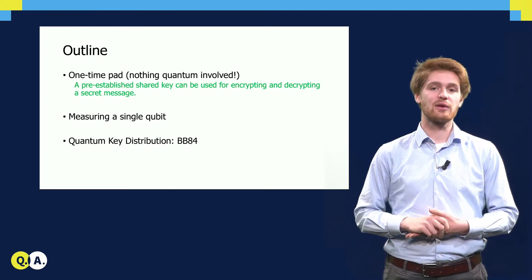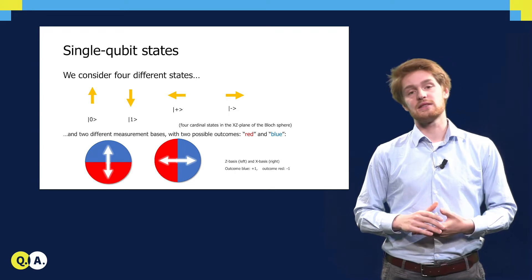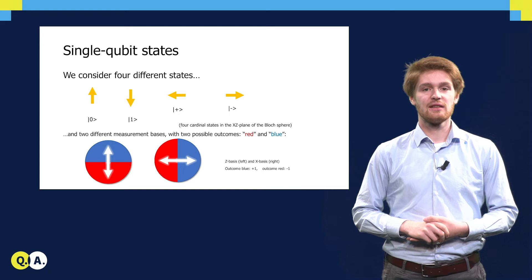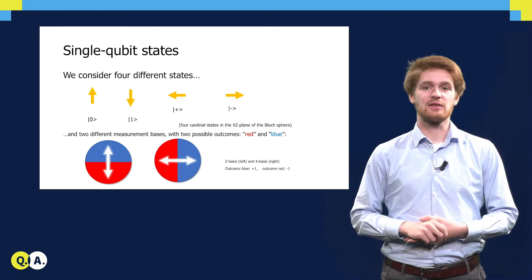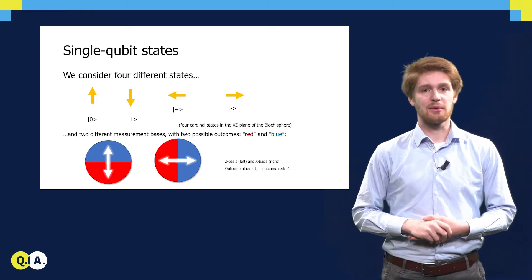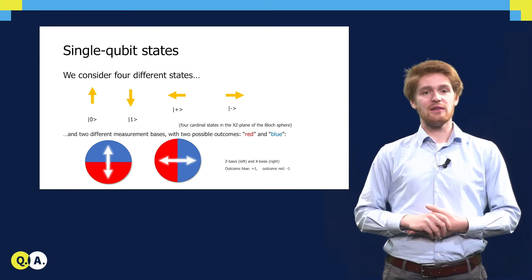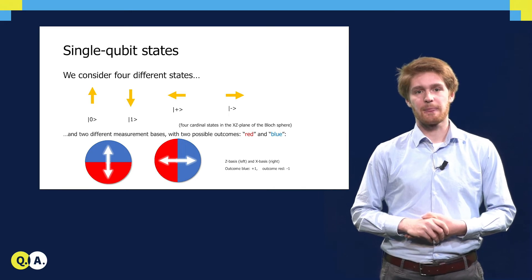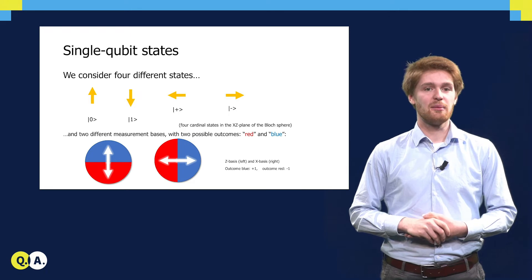In the BB84 protocol, we will use four different single qubit states. There is the zero state, here represented by an upward arrow, the one state, a downward arrow, and the plus and minus states, here depicted as horizontal arrows. On top of this, we will use two possible measurement bases, a vertical basis and a horizontal basis, which you can think of as slits through which the state passes. We denote the two possible outcomes as red and blue.